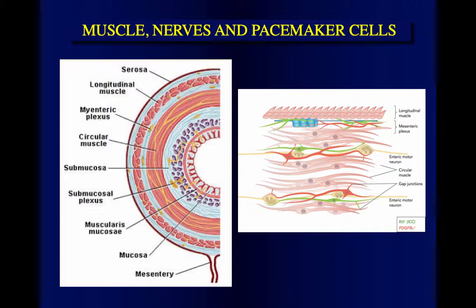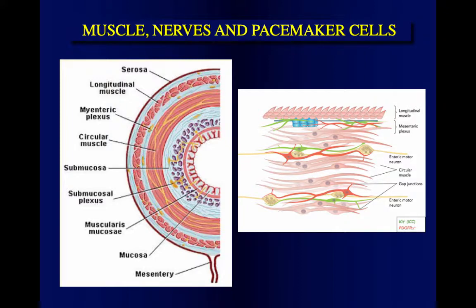The gut wall has a layer of epithelium, then the submucosa where mainly immune cells are located, and then the muscle arranged either longitudinally or in a circular fashion. The idea behind motility is really to move food — or in the lower part, the remnants of food or feces — in a coordinated fashion downstream.